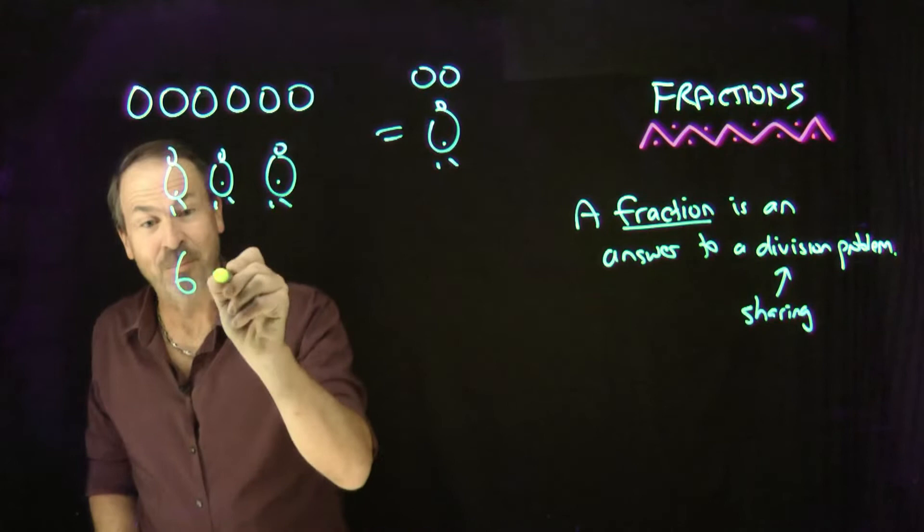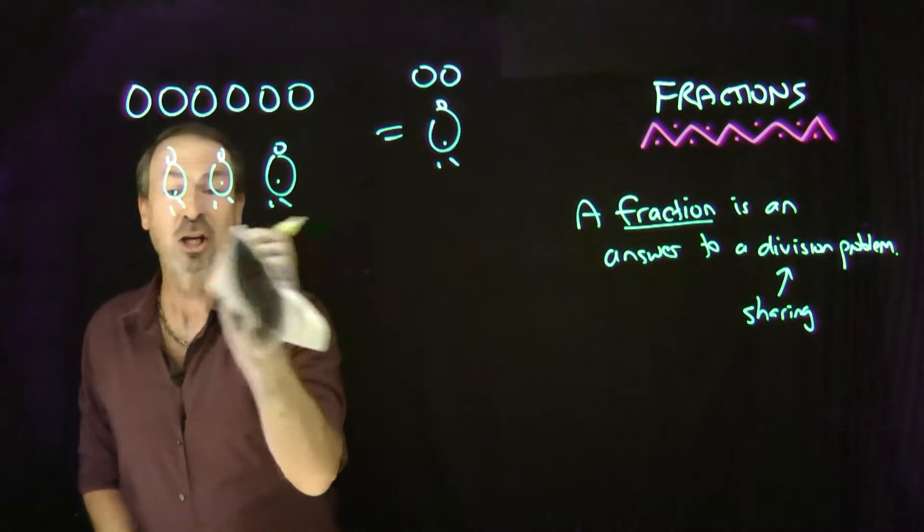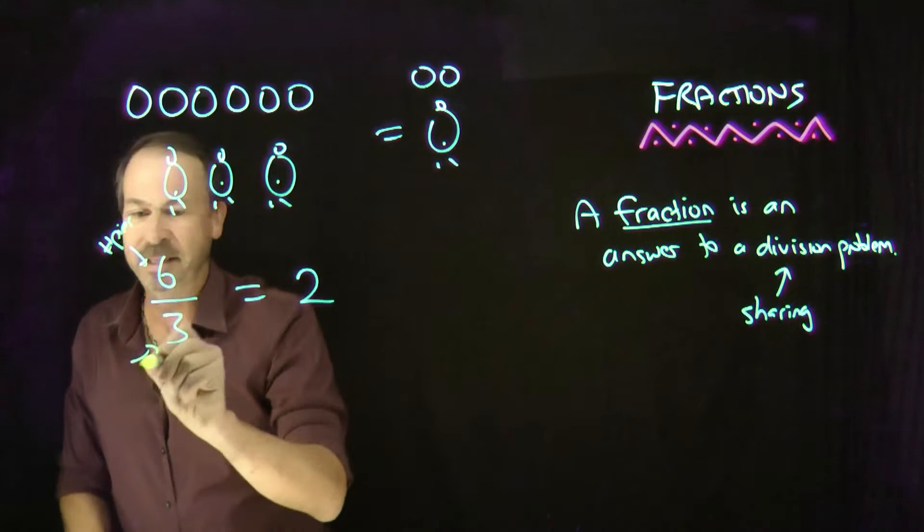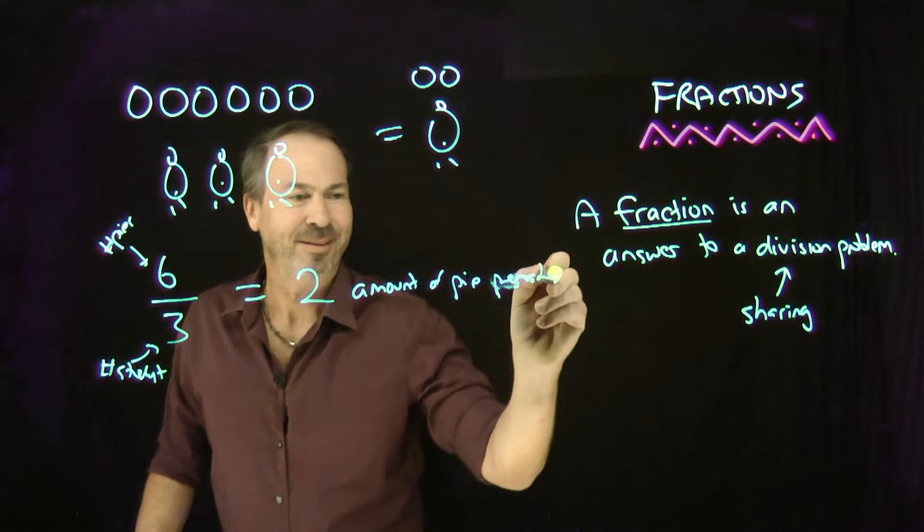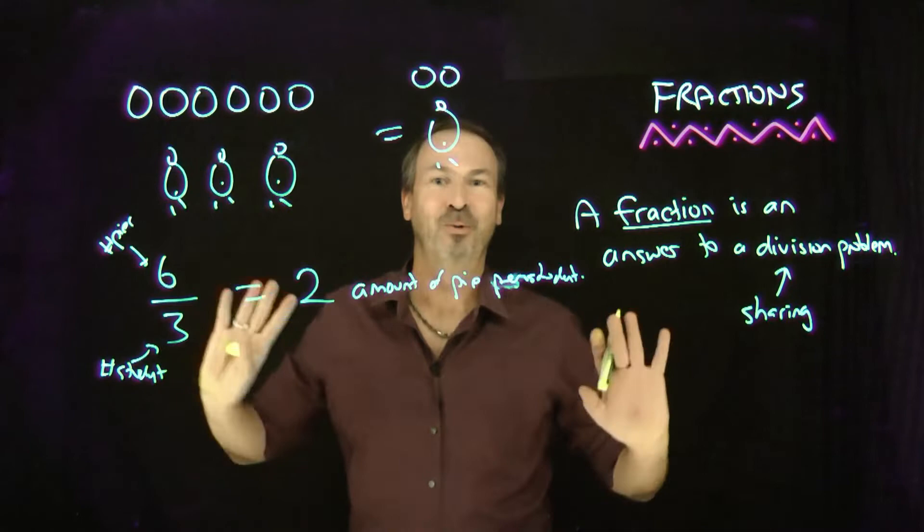Now, most people write this as a division problem. Six divided by three will give two pies per student. But I'm saying a fraction is an answer to a division problem, so I'm going to use fraction notation for it. Six pies for three students is the answer, two pies per student. So the top line here is the number of pies. The bottom line is the number of students. And I see it results in two pies, two is the amount of pie per student.